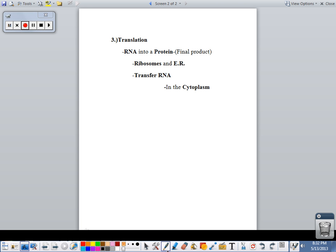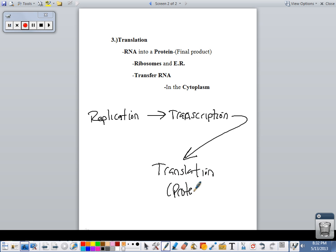But this is the central dogma. You have replication, just talking about making DNA. And then you have transcription, which is making RNA. And then you have translation, which is making a protein. That's the central dogma. Something they didn't understand for many, many years. How does this all work? What is the part that makes up our genetic material?